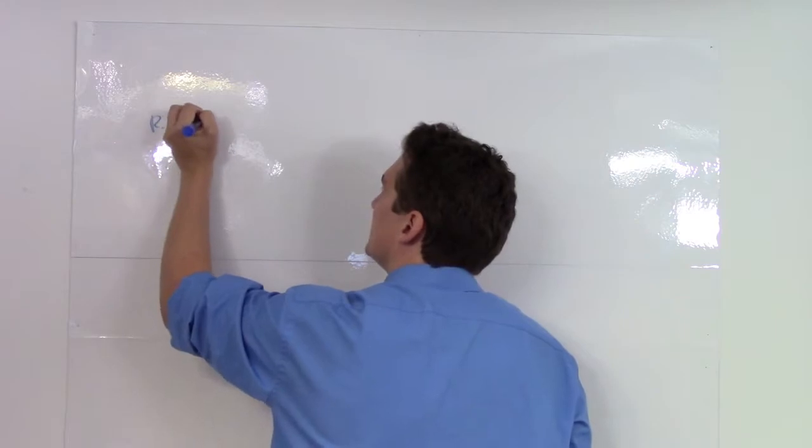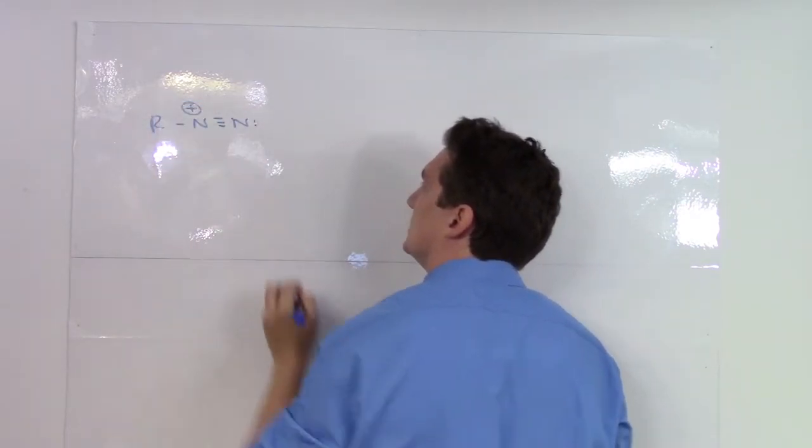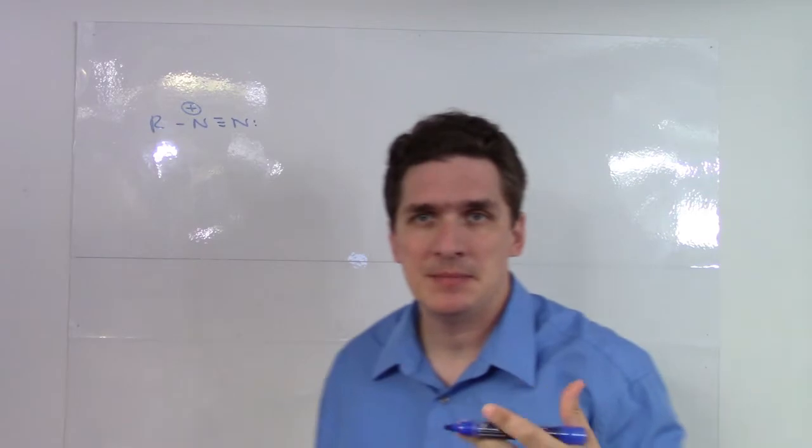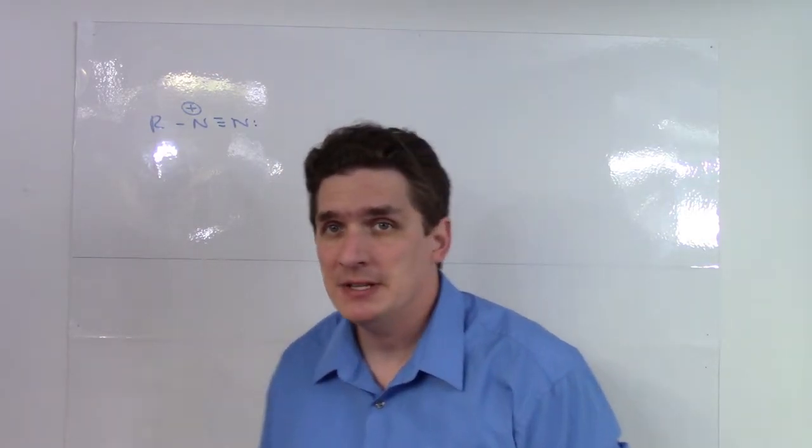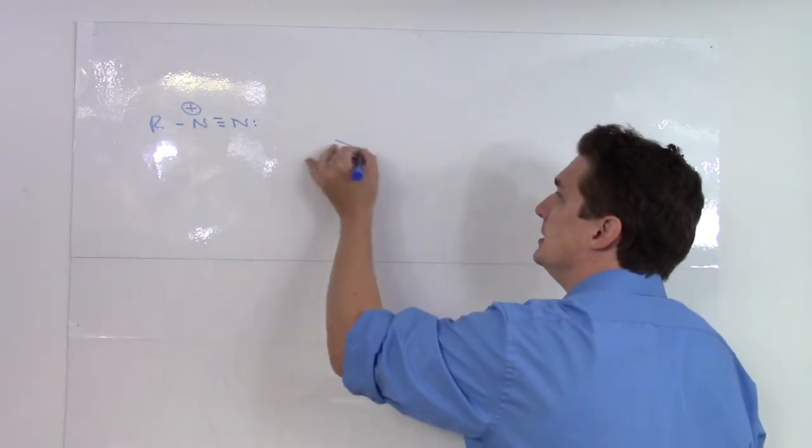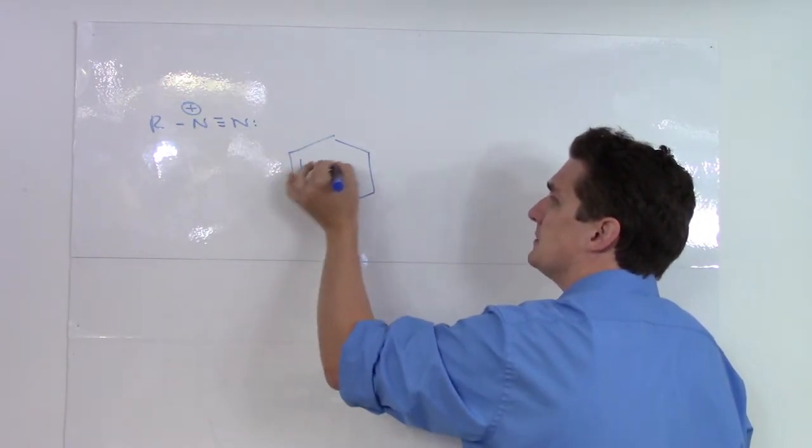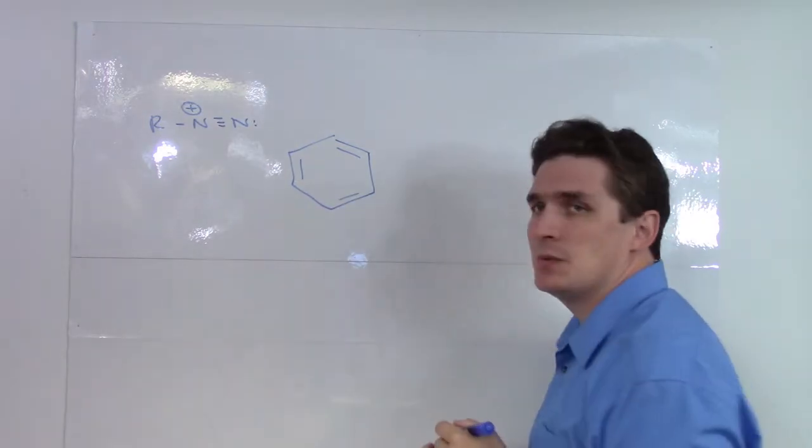The thing is that we have a diazonium salt like this, and this is something we talked about making in a previous video. This is actually very reactive towards benzene, and if we do have some type of benzene complex, what we'll get is nucleophilic attack of the benzene ring onto this group.